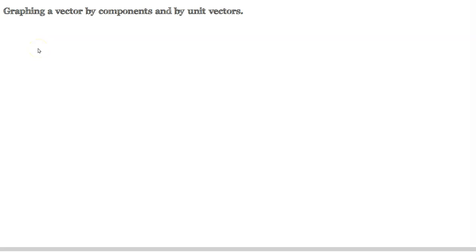Welcome friends, in this lesson let's take a look at graphing a vector by components and by unit vectors. So first let me just begin by adding a coordinate system in here. So here's a coordinate system. And imagine our goal is to graph the vector that's given by the following components.